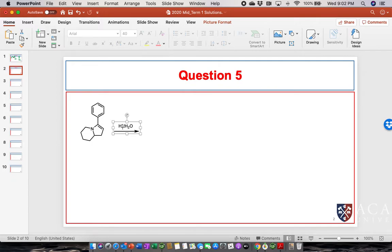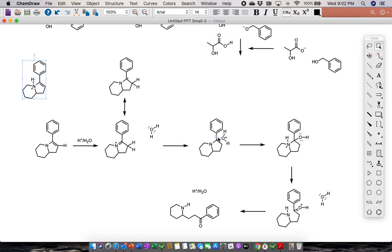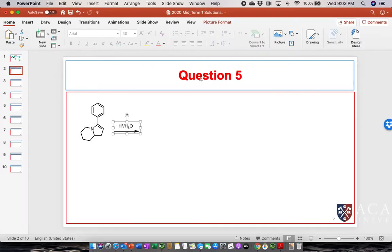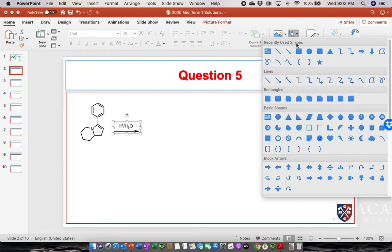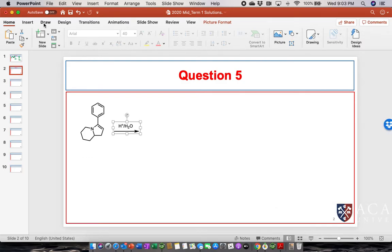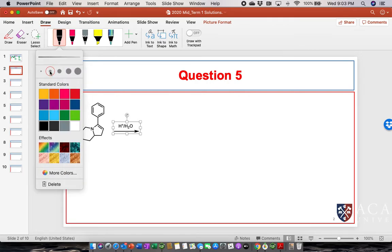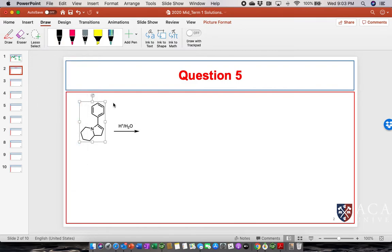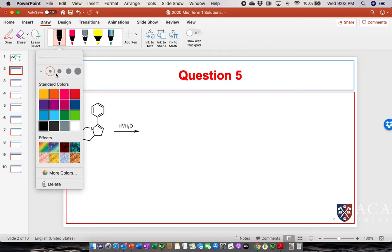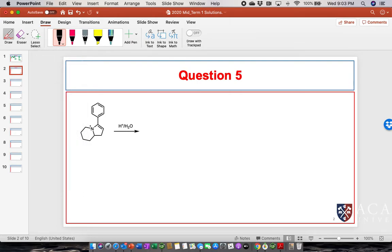So instead of protonating here, I need a pair of electrons. Well, yes, I do. So let's put a pair of electrons there. We'll put a pair of electrons on our nitrogen. We can start this reaction. There we go. So now we have our pair of electrons.